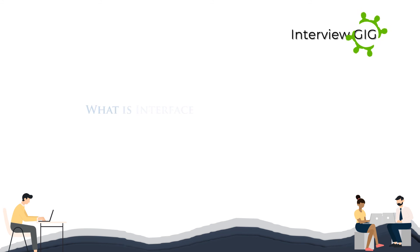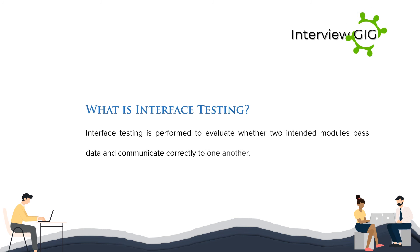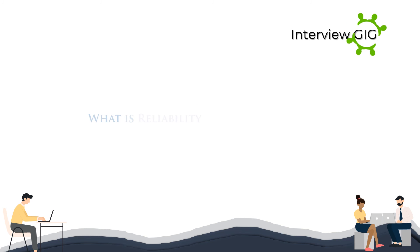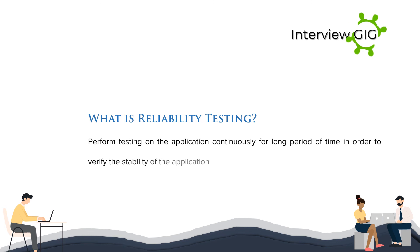What is interface testing? Interface testing is performed to evaluate whether two intended modules pass data and communicate correctly to one another. What is reliability testing? Reliability testing involves performing testing on the application continuously for a long period of time in order to verify the stability of the application.